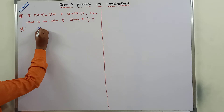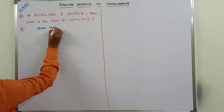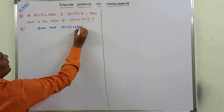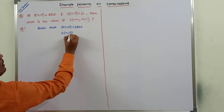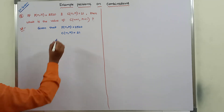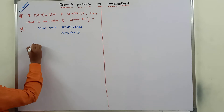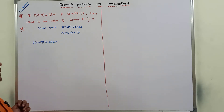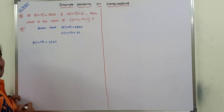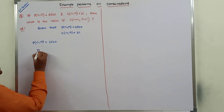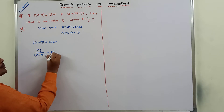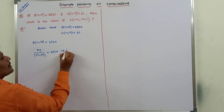Given: P(n, r) is equal to 2520 and C(n, r) is equal to 21. The formula for P(n, r) — that is nPr — is n factorial divided by (n minus r) factorial, which equals 2520. This is equation 1.